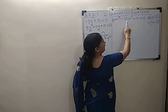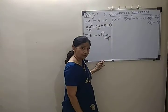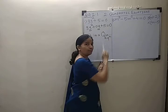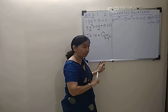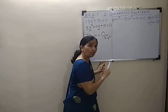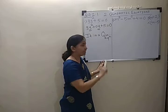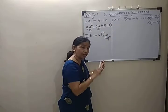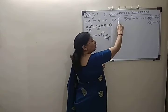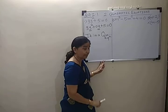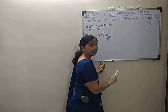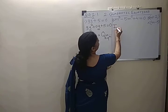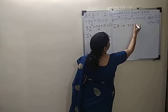Now the second example: M³ - 5M² + 4 = 0. Can I call this a quadratic equation? No, never. It does satisfy the first condition — there is only one variable, M. But it does not satisfy the second condition. The degree, meaning the highest index, is 3, and we need the highest index to be 2. So this is not a quadratic equation.